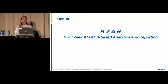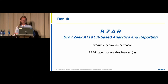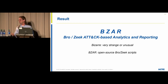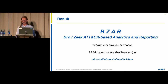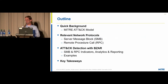This project is called BZAR — B-Z-A-R — a play on the word 'bizarre,' meaning something very strange or unusual, especially as to cause interest. BZAR is a collection of Zeek scripts that look for different indicators in the RPC and SMB protocols. It does analytics — some very simple, some more complex — to piece things together, and it does reporting by writing to the Zeek notice log. It is open source, published to GitHub earlier this year under the MITRE ATT&CK repository: mitre-attack/bzar.